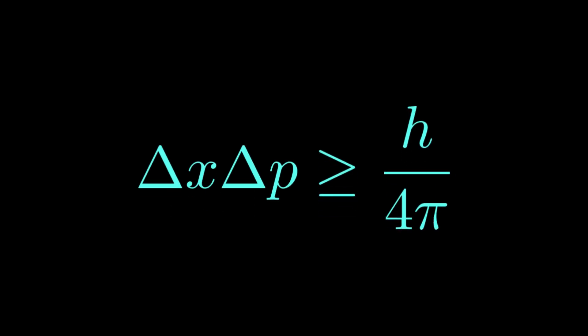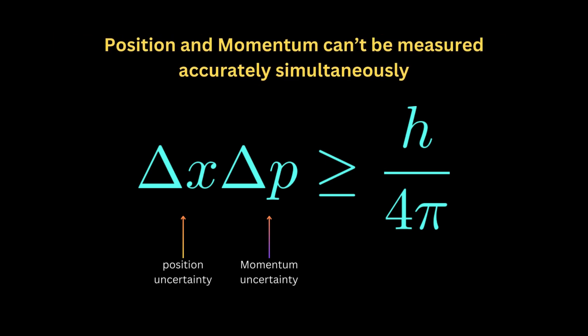We all know Heisenberg's uncertainty relation, or maybe we've all heard of it. This relation says that there is an unavoidable uncertainty, or an error, when measuring the momentum and position together of some quantum object. There are natural limits to knowing both simultaneously.